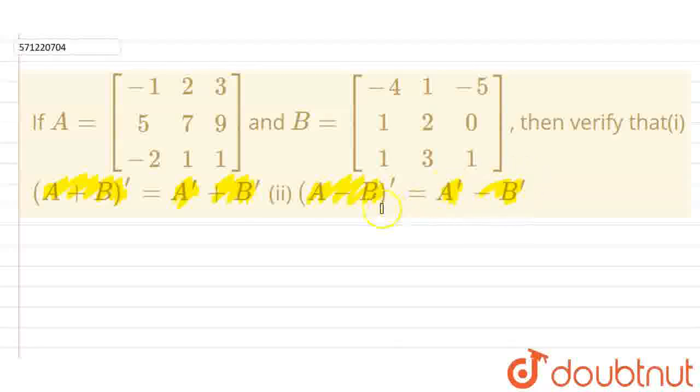Alright, so we need to verify these things, the given parts. So let us start with the solution. First of all, we need to find out the LHS of the given part. Then we will find out the RHS of the given part and then we will check if both sides are equal. Then we are done with the job.